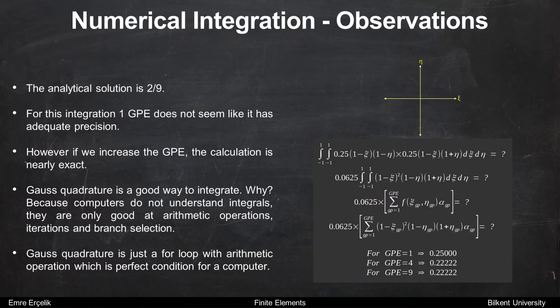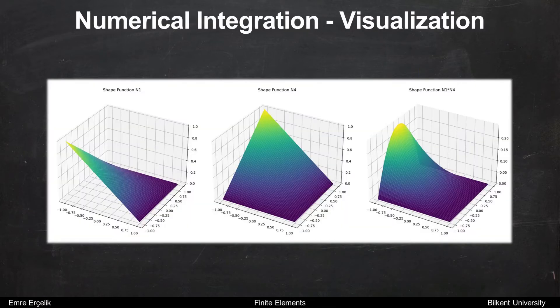Why? Because computers do not understand integrals — they are only good at arithmetic operations, iterations, and branch selection. Gauss quadrature is just a for loop with arithmetic operations, which is the perfect condition for a computer. And this is the visualization of the problem: shape function one multiplied by shape function four for a linear quadrilateral element. We are calculating the integral for the third image.